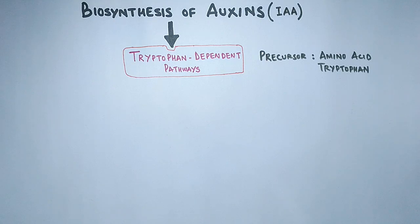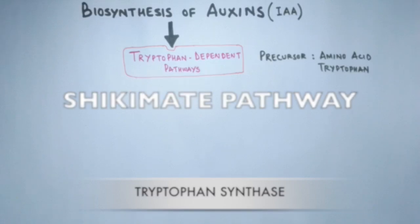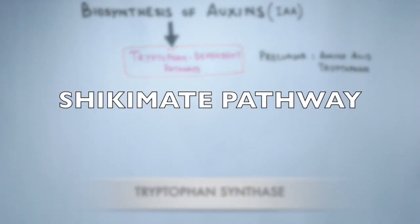Tryptophan is first synthesized by plants with the help of tryptophan synthase enzyme via the shikimate pathway. This shikimate pathway is absent in animals, which is why we cannot make our own tryptophan.